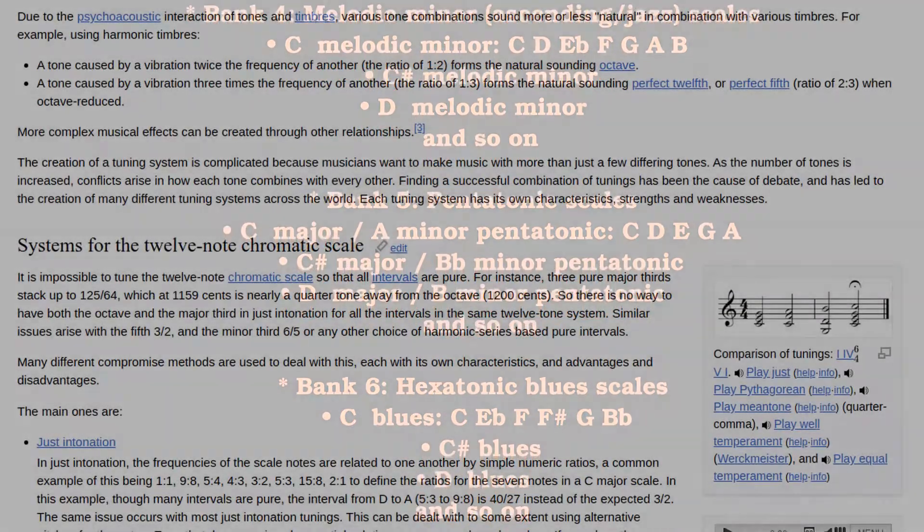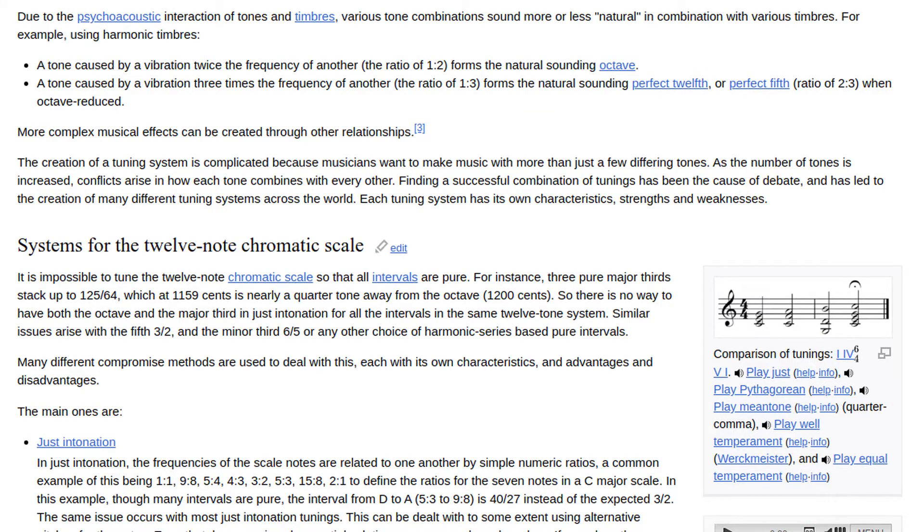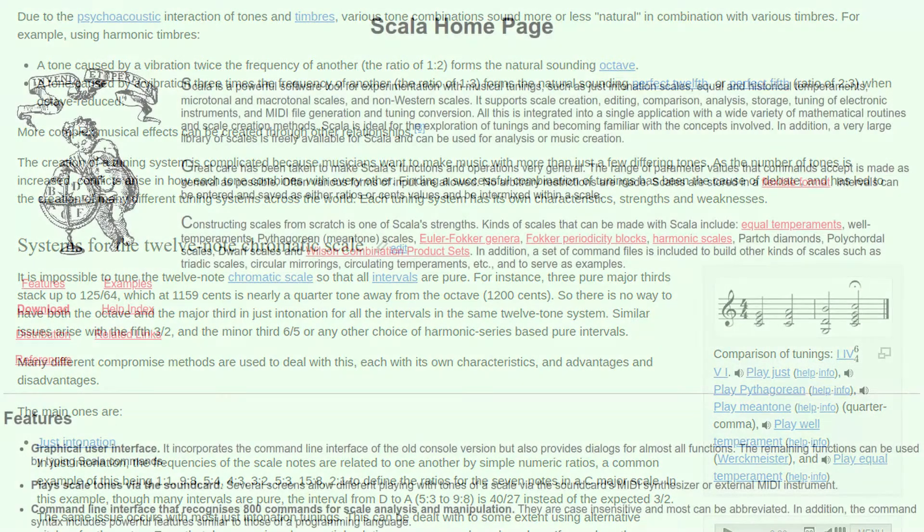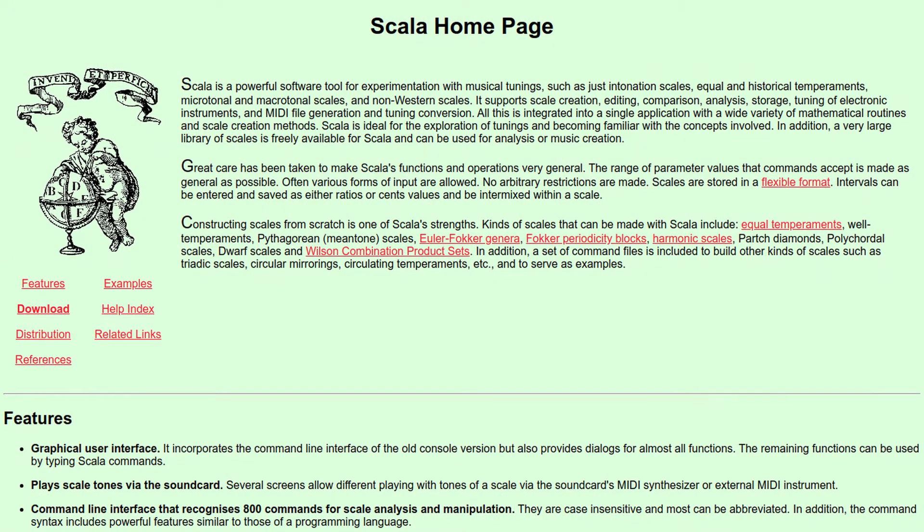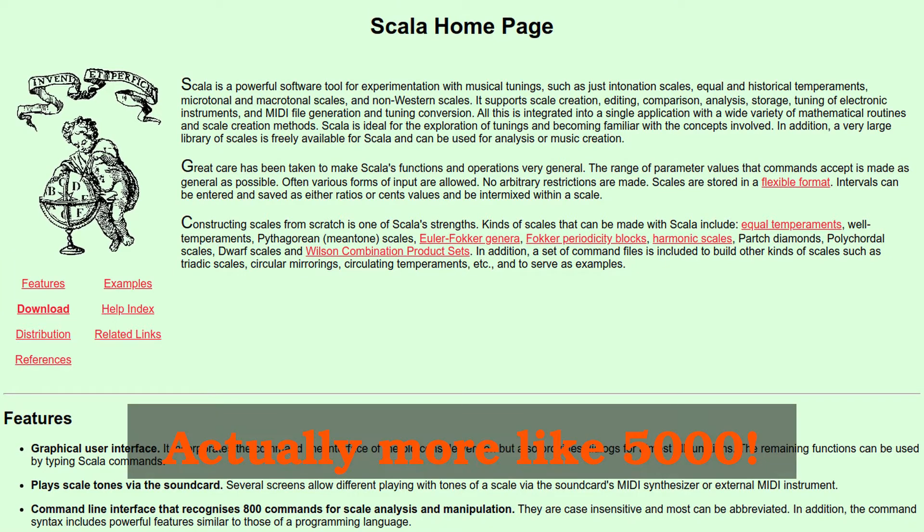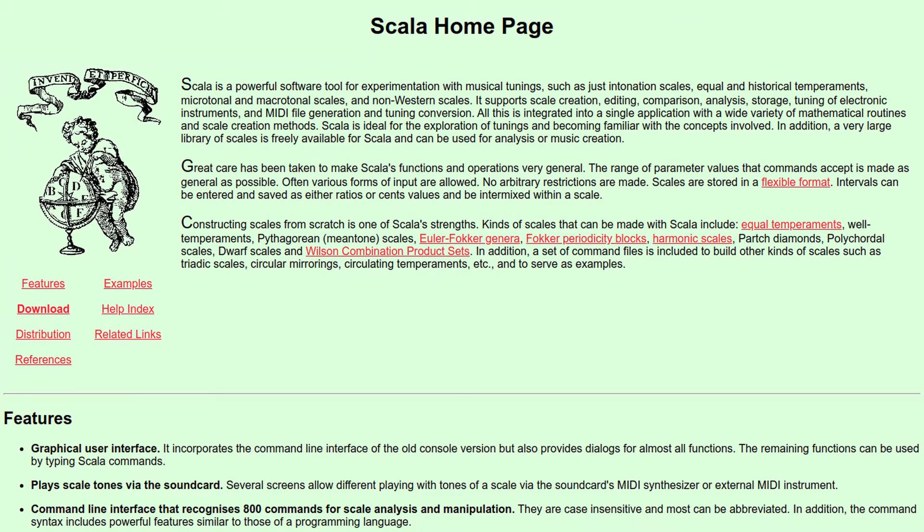If you've ever investigated historical and experimental and various alternative tuning, there are about 150 gazillion scales out there. And if you have ever looked into the software package Scala, this is a software library that lets you work with various different tunings and scales. And Scala, if you download it, comes with a database of hundreds of different types of scales.